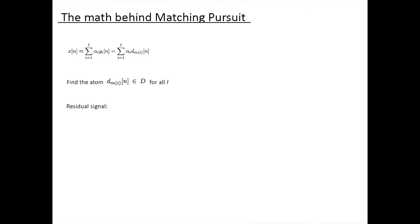The atom should minimize the true norm of the residual signal r i, which we define as. From here on out we will refer to dm as g i.